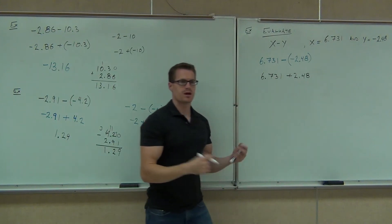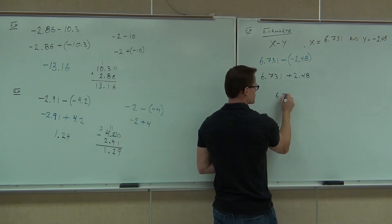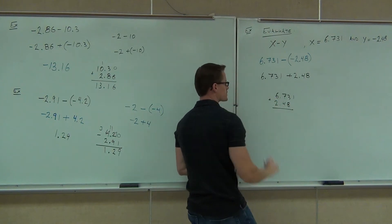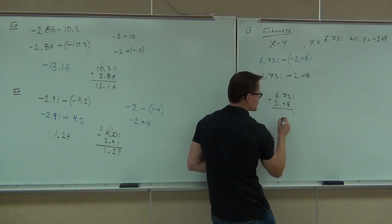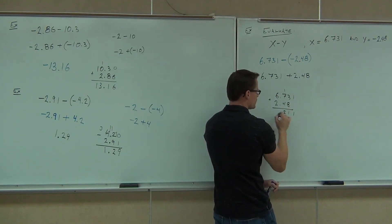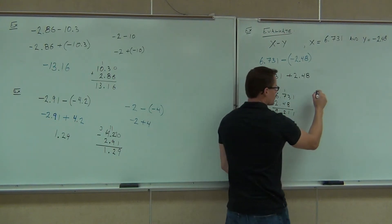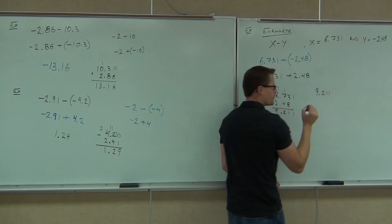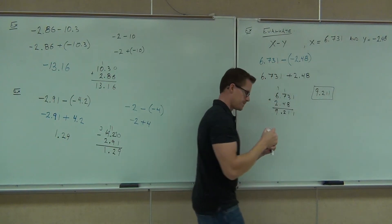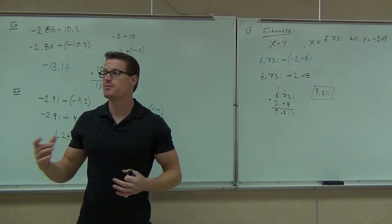That's a nice problem — we've got a positive plus a positive, so we're just going to add those like normal. We put 6.731 on the top, 2.48 on the bottom, lining up the decimal places. We'll add them: 1 in the thousandths, 11 in the hundredths — carry that — 12 in the tenths — carry that — and we get 9.211. Positive or negative? Positive. Yeah, you're just adding positives here. Make sure we're using the addition rule like we have before.